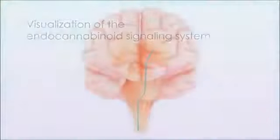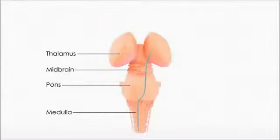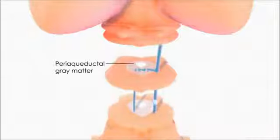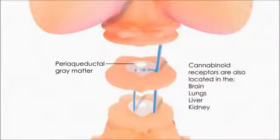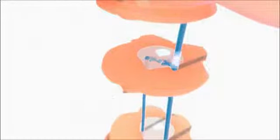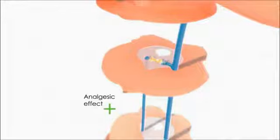In the normal transmission of pain, ascending nociceptive signals travel up the spinal thalamic pathway to the thalamus, where they are processed and relayed to cortical and other areas. The ascending pathway also relates to the periaqueductal gray matter, an important part of the descending pain modulating system where specific cannabinoid receptors are located. Stimulation of the periaqueductal gray is known to produce an analgesic effect.